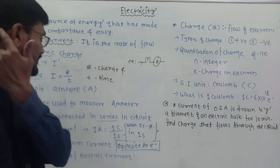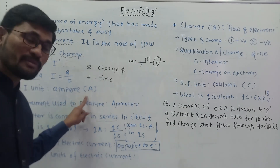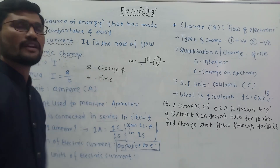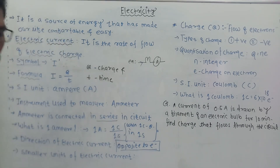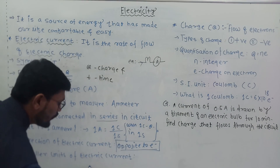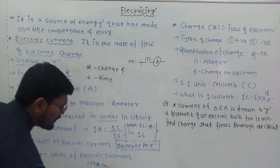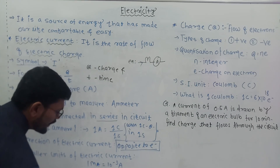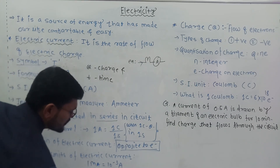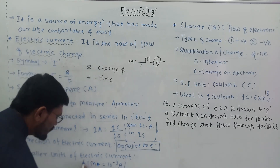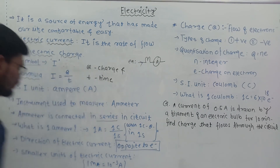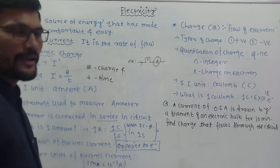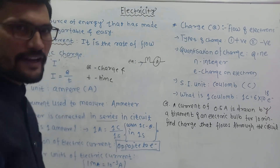Sometimes ampere becomes a very large unit, and to measure small amounts of current we use smaller units. These are milliampere, where 1 milliampere = 10⁻³ ampere, and microampere, where 1 microampere = 10⁻⁶ ampere. These are the smaller units used to measure electric current. That is all about electric current.